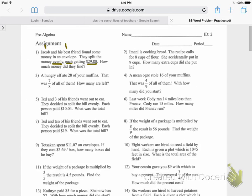So then you have to ask yourself, is this the total amount of money or is this half the money? So let's read it again. Jacob and his best friend found some money in an envelope. They split the money evenly, each getting $29.80. So it sounds like each of them has $29.80 out of this envelope. $29.80, $29.80. So they want to know, and here's the question, how much money did they find?